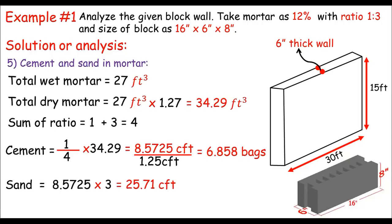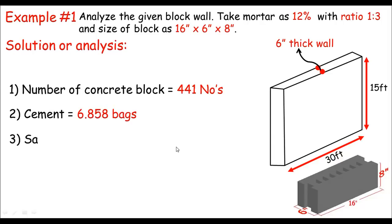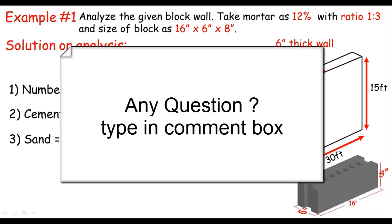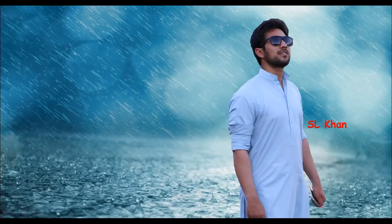In summary, for this block wall analysis: the number of concrete blocks is 441, cement is approximately 6.8 bags, and sand is 25.71 CFT. We have learned the analysis of concrete block work. If you have any questions, let me know in the comment section. Thank you, dears — see you next time!